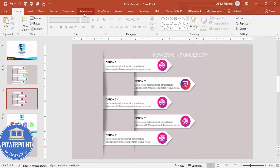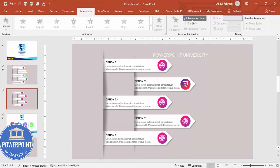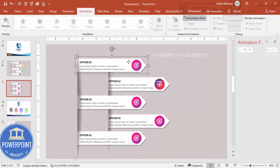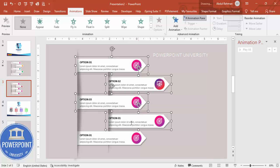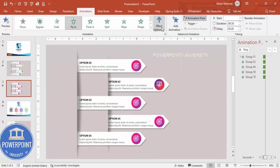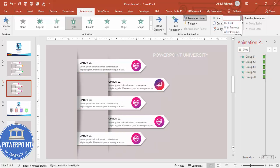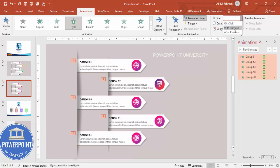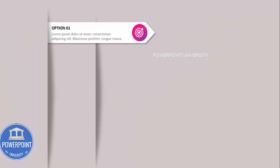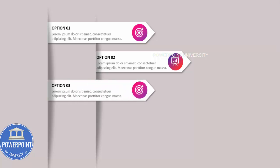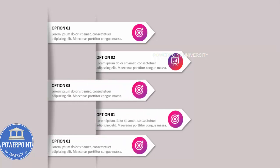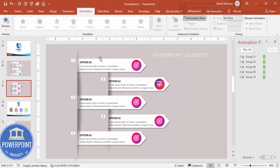Go to Animations and enable the Animation Pane. Select all five options, apply Fly In, set the direction to From Left, and set it to happen On Click. If you play the slide now you can see each option flies in on click. Depending on your requirement, you can increase or decrease the number of options.